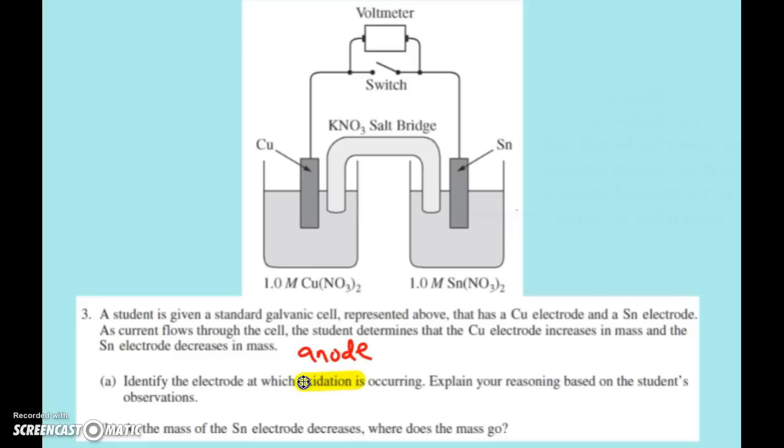Explain your reasoning based on the student's observations. That's kind of key, based on the student's observations. And the observations were that the copper electrode increases in mass, the tin electrode decreases in mass. Yes, you'll be given standard reduction potentials, but they want you to figure out based on the student's observations, not on the reduction potentials.